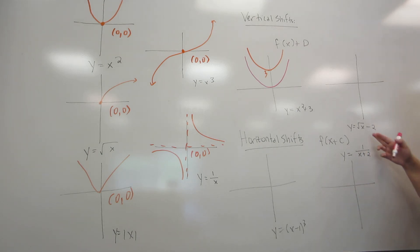When I go to graph square root of x minus 2, I start with the square root of x, whose most important point is at the origin. And then I move everything down 2, so its most important point would now be at negative 2 on the y axis.